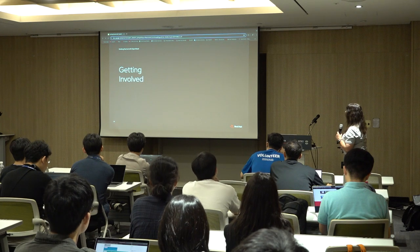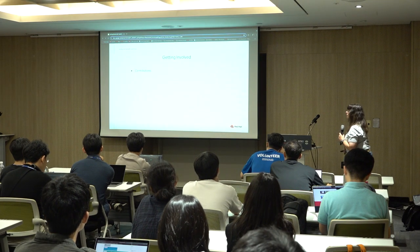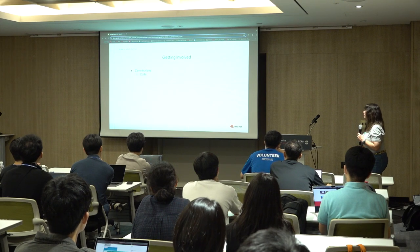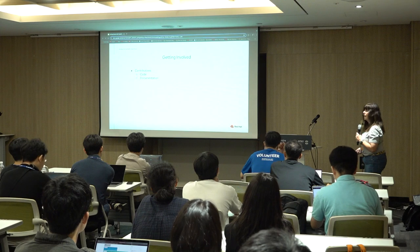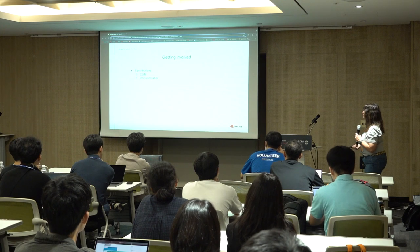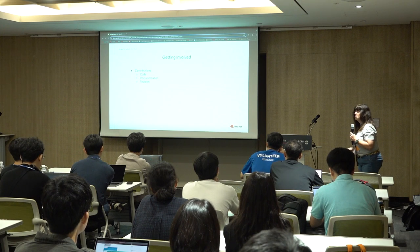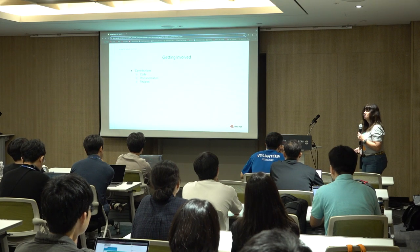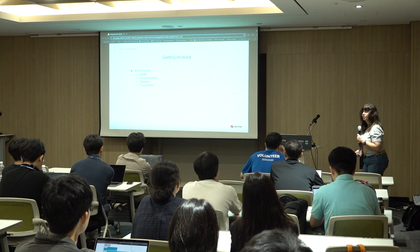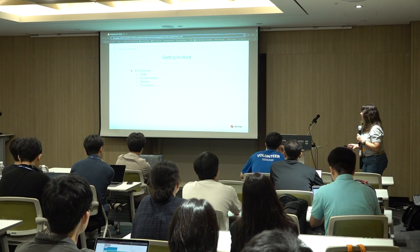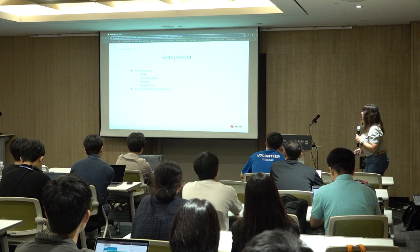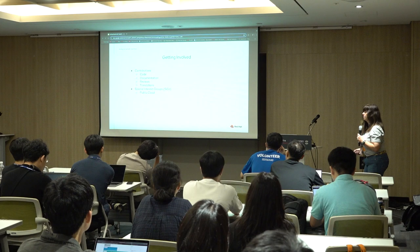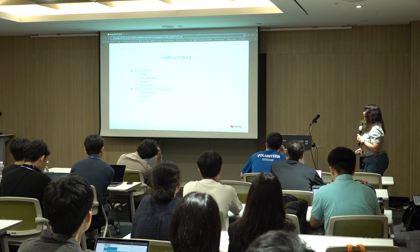How to get involved — contributions. But what are contributions? Code, yes, everyone thinks of code. Documentation, very important. Reviews — I can review code very quickly and very thoroughly, and I'm not even a coder. Translations, also very important. Special interest groups are for people who have a common interest in different subjects — the public cloud SIG is a very active one, as is the scientific SIG.